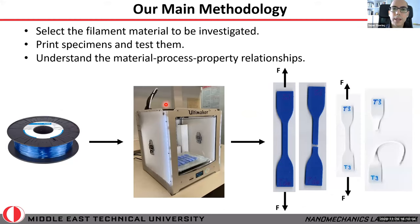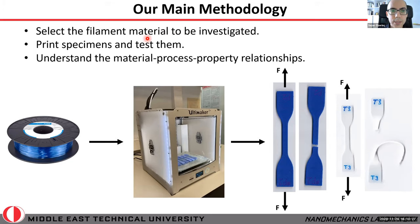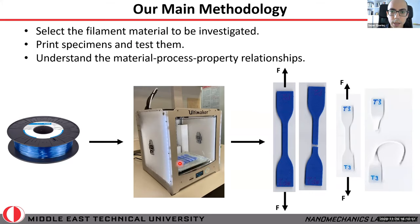Our general methodology is common to most of the work I'll present. We select the filament material to be investigated — there are many options from ABS to PLA to PET. We directly print our specimens using the 3D printer, so no cutting or additional processing is required. We print tensile specimens, pull them in a testing machine, and check their strength and ductility to understand the relationships between material properties, process parameters, and final part performance.